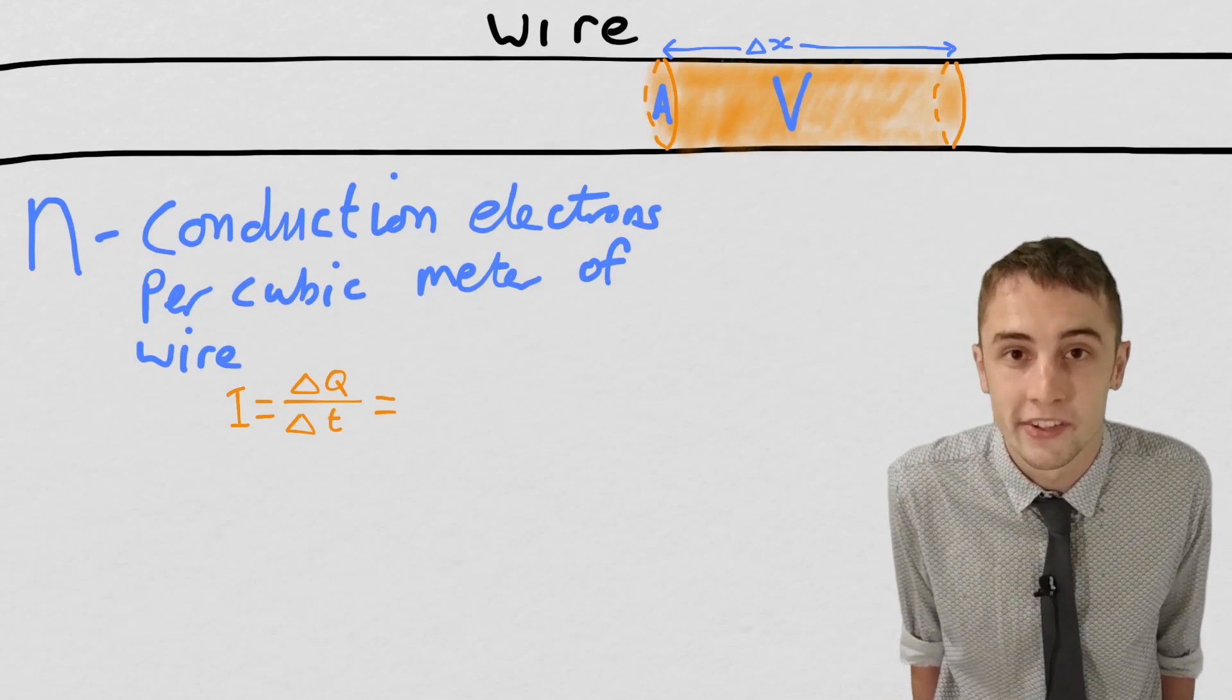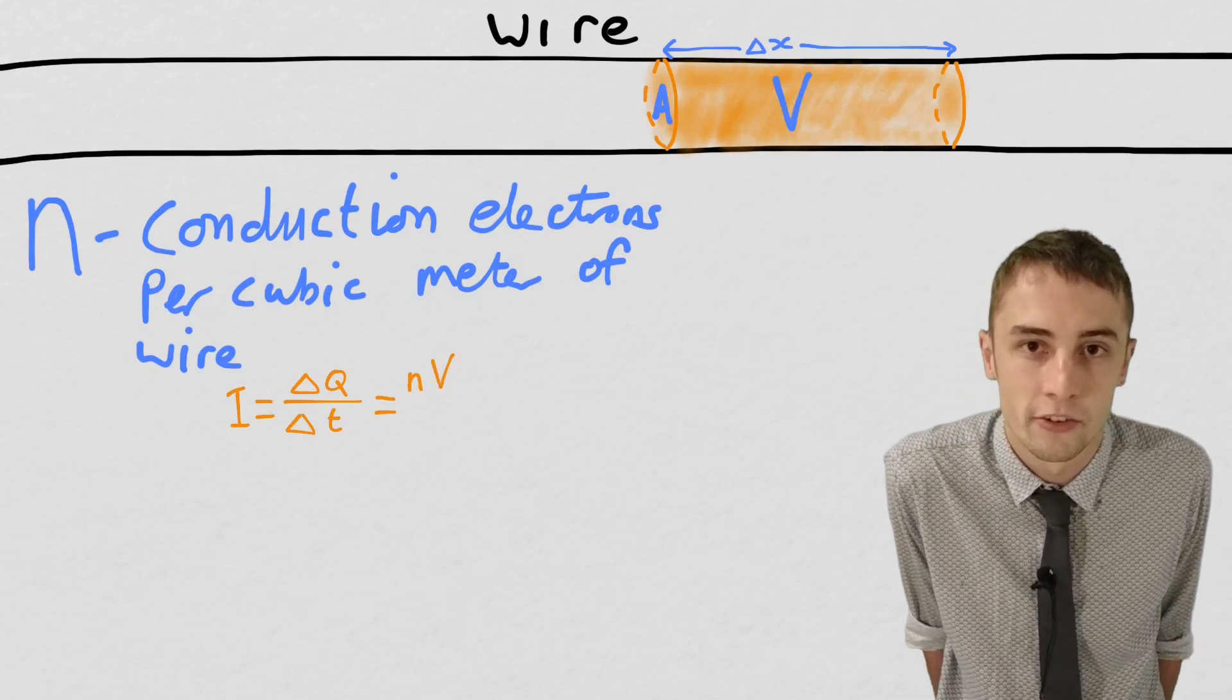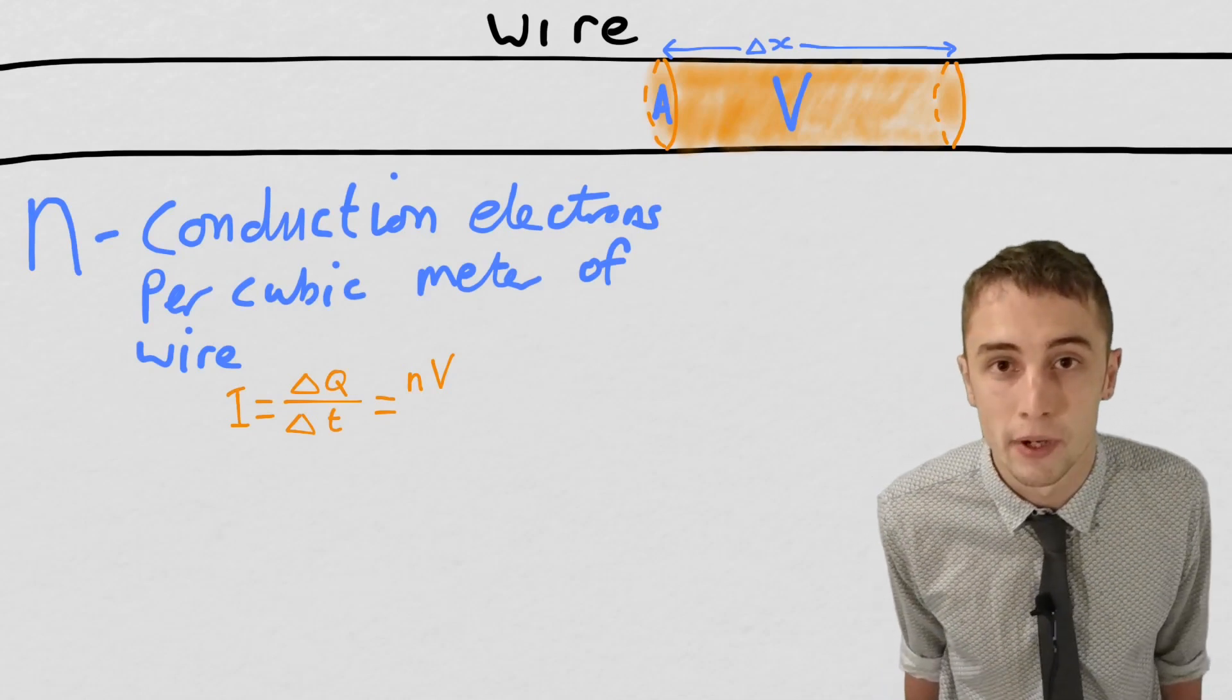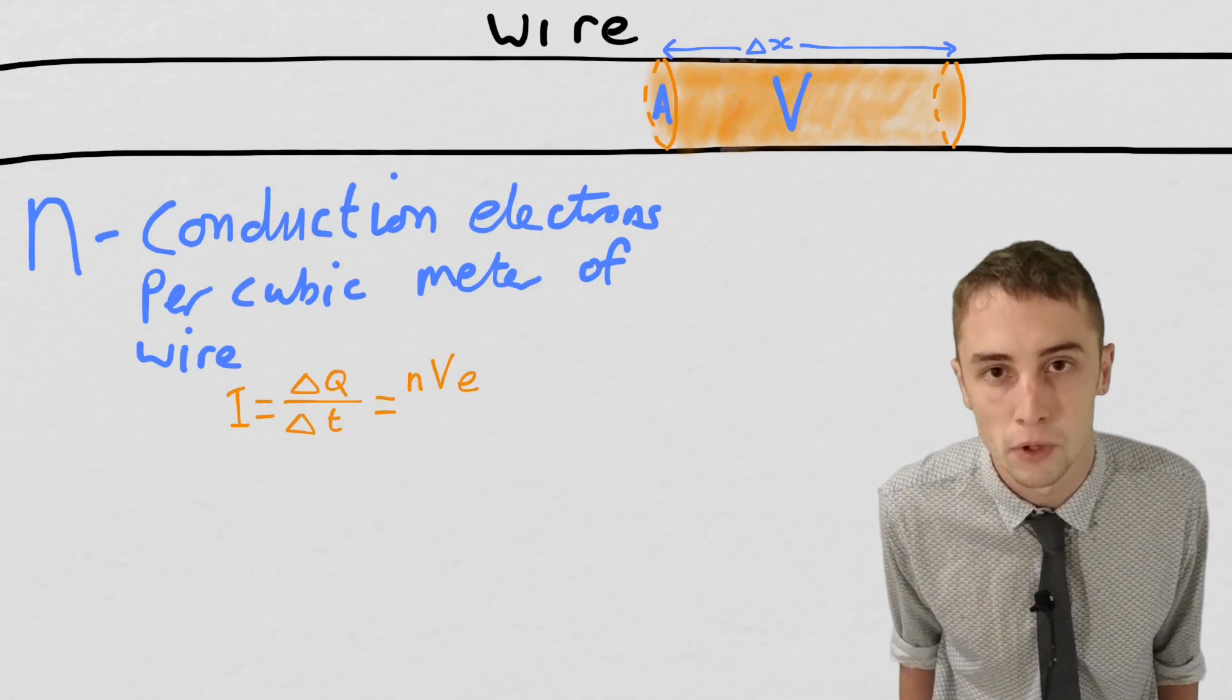So the number of electrons is going to be given by nV. That's the number of electrons per cubic meter multiplied by the volume. And we're going to multiply that by e. That is the charge on an electron to get the total amount of charge moving through this section of wire.